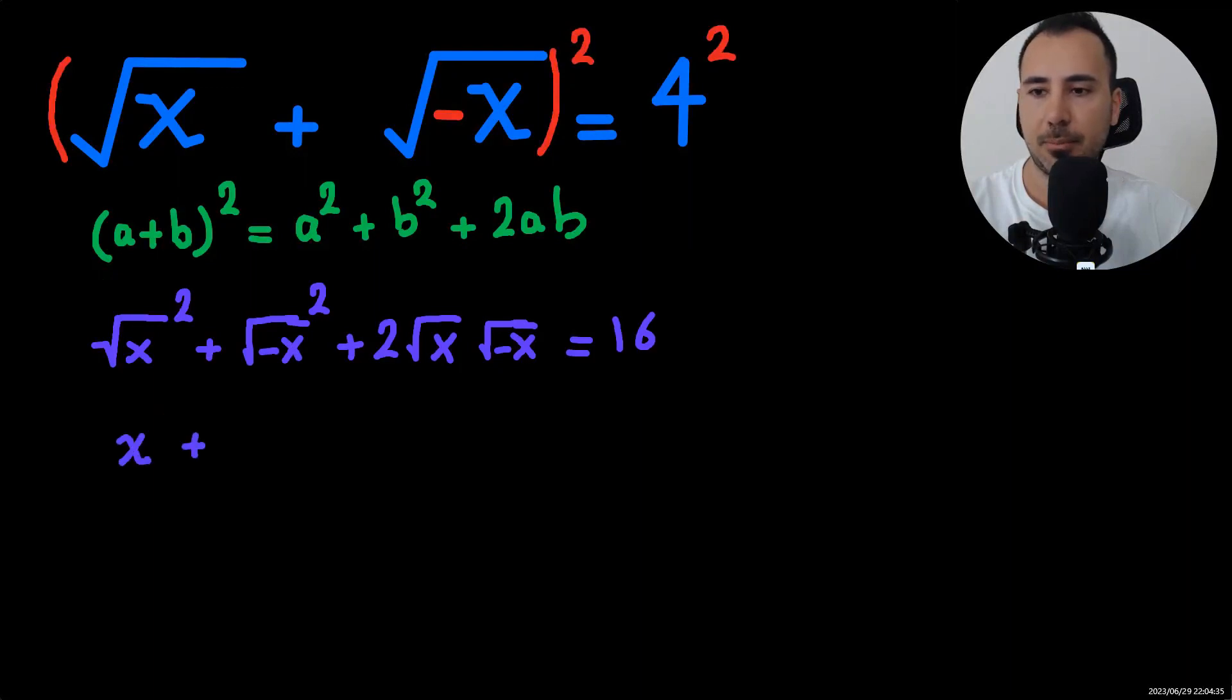This would be x plus negative x plus 2 times the square root of x times the square root of negative x will be this again is equal to 16. As you see x and negative x will be canceled.